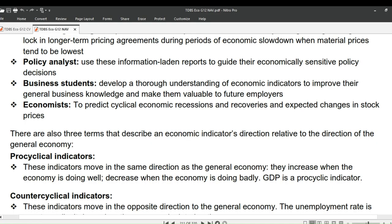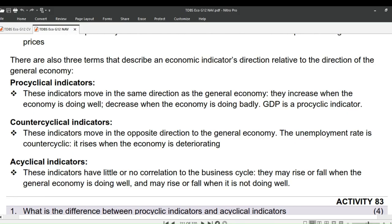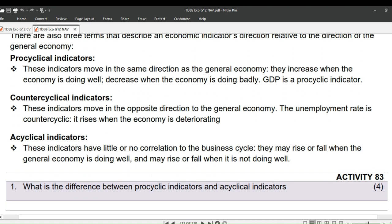Countercyclical indicators move in the opposite direction to the general economy. The unemployment rate is countercyclical because it rises when the economy is deteriorating. Lastly, acyclical indicators have little or no correlation to the business cycle — they may rise or fall when the general economy is doing well, and may rise or fall when it is not doing well.